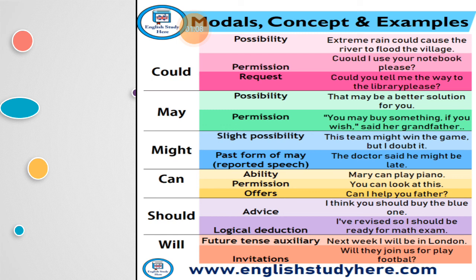Here is another chart for you. The modals are given again with examples. They are highlighting the actual use and function of these modal verbs. 'Could' is showing possibility, permission, and request. 'May' is showing possibility and permission. 'Might' is showing slight possibility and past form of 'may' in reported speech. 'Can' is showing ability, permission, and offers. 'Should' is showing advice and logical deductions. 'Will' is highlighting the future tense auxiliary. All these are shown with examples.